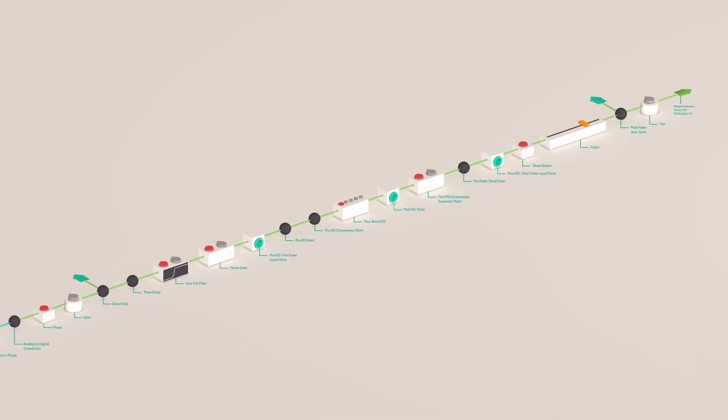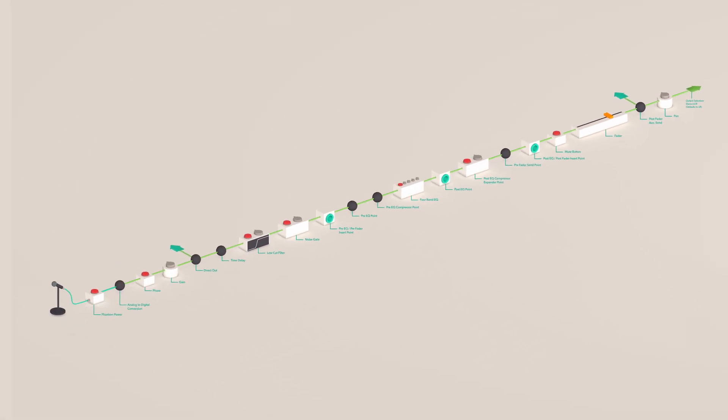In this example, we have seen the signal flow schematic for the Midas M32. All consoles work on the same premise, though.